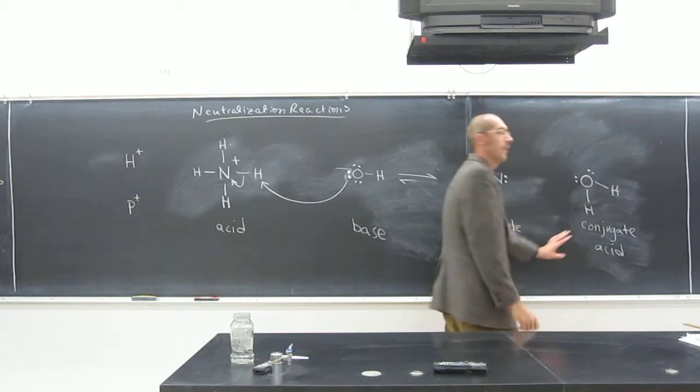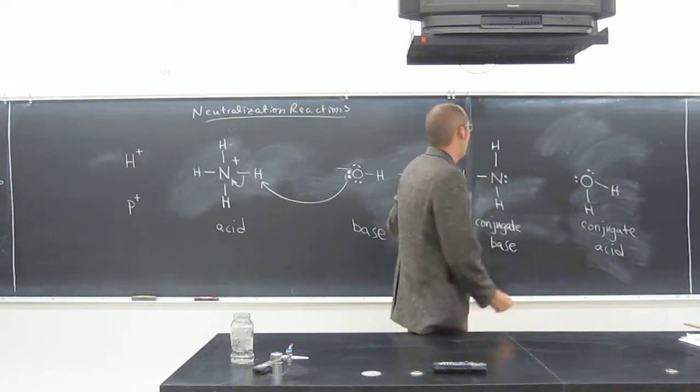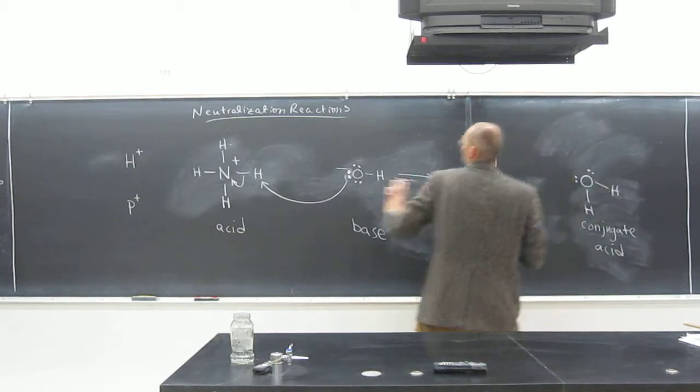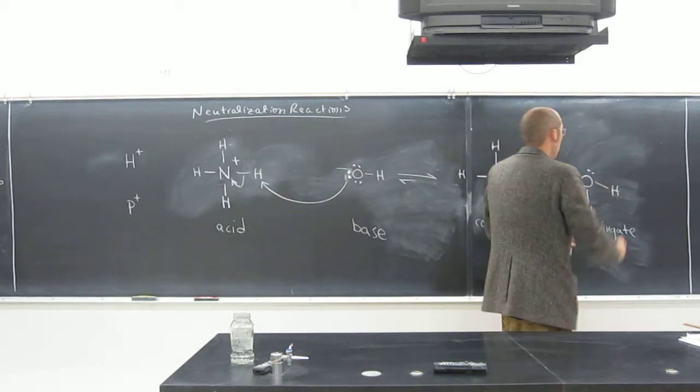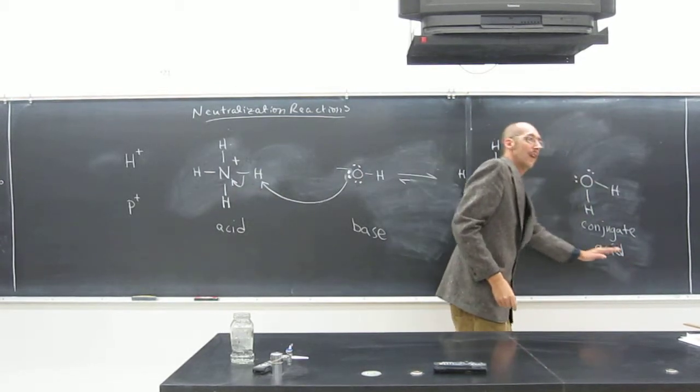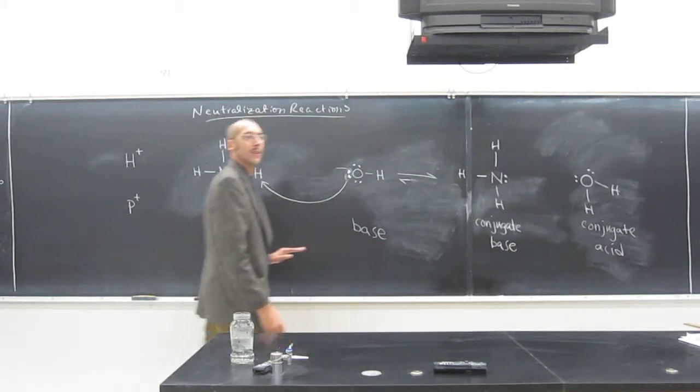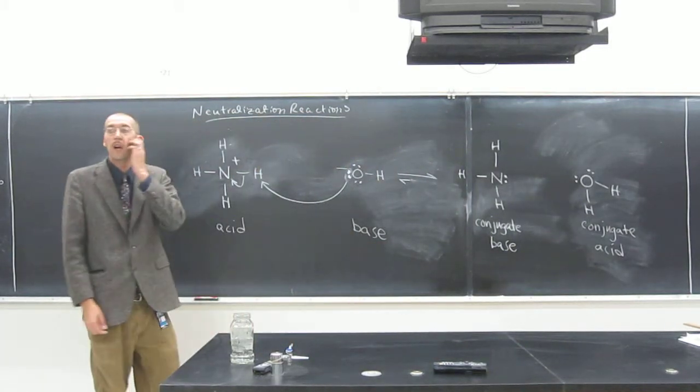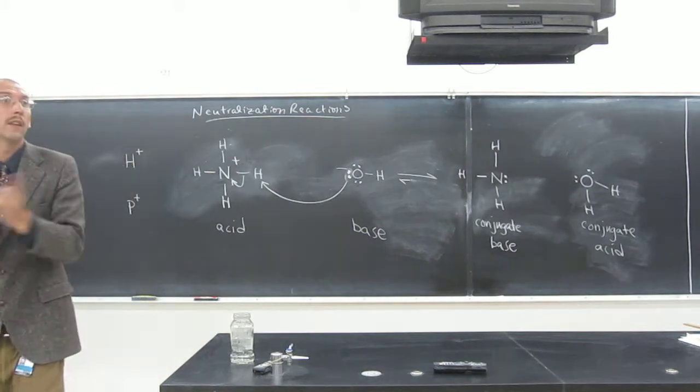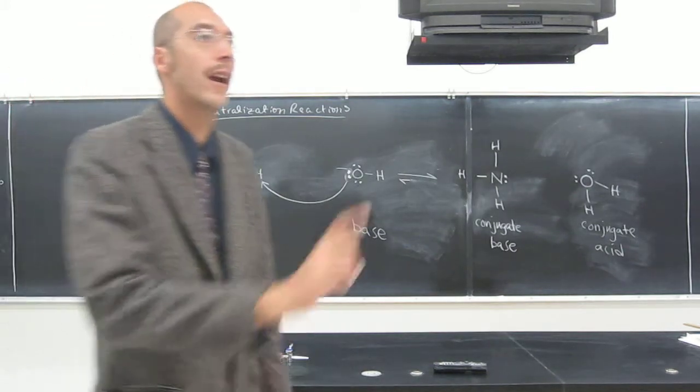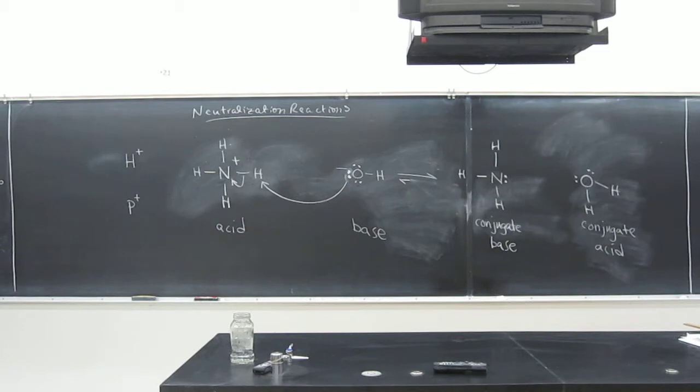You can think of it the opposite way, too, though. What if we wrote this over here and this over here? Then this would be the acid, this would be the base, this would be the conjugate base, and this would be the conjugate acid. So it all depends on which way you write the thing. Acid-base reactions, because they're in equilibrium, go back and forth.